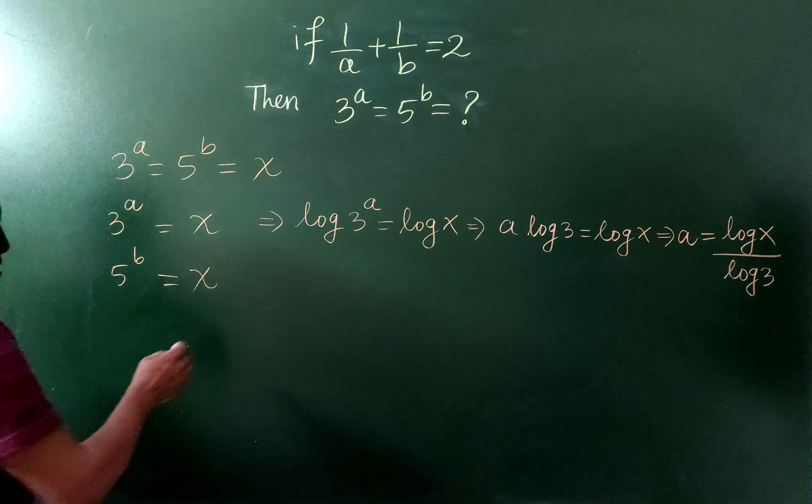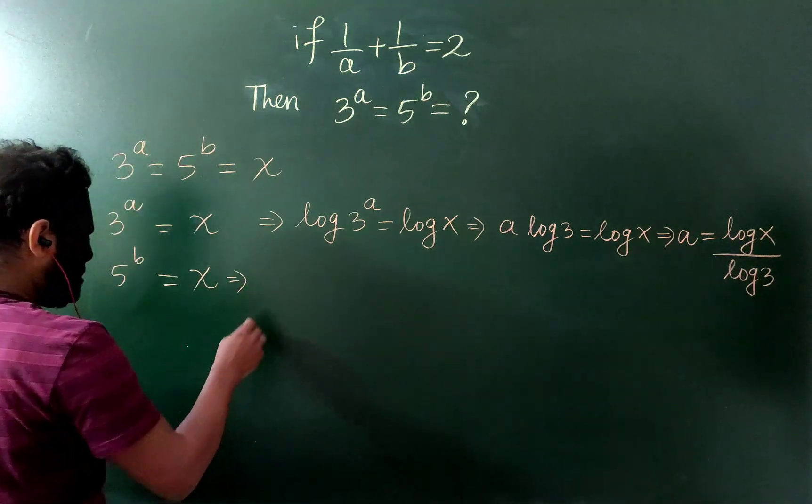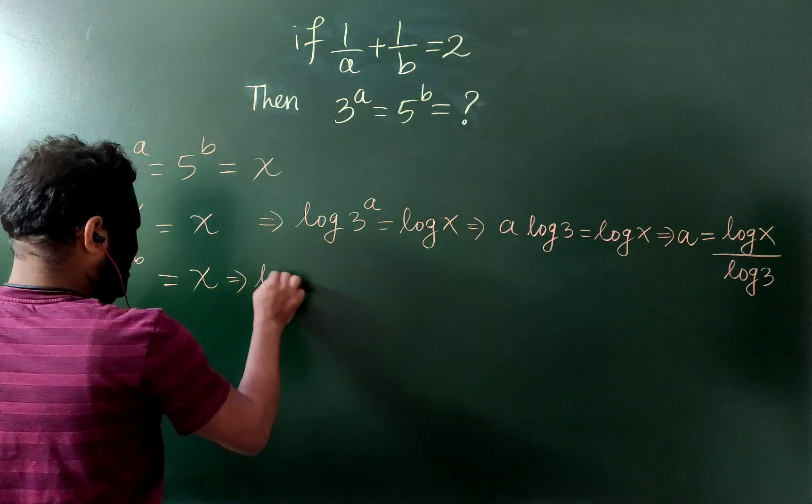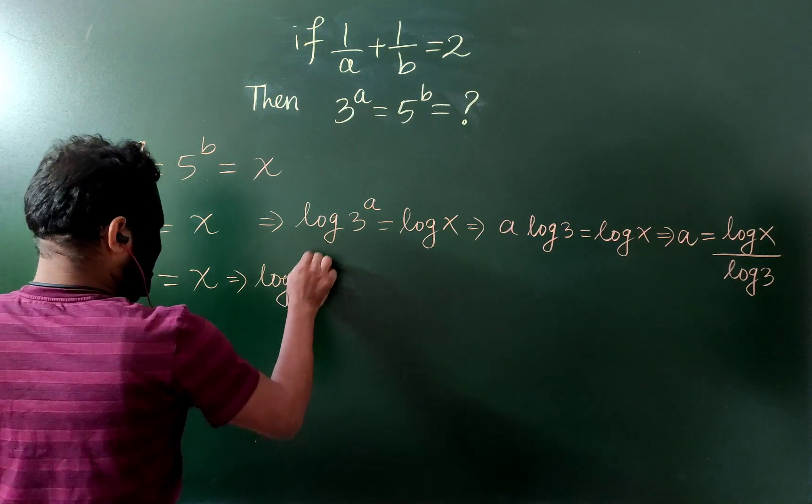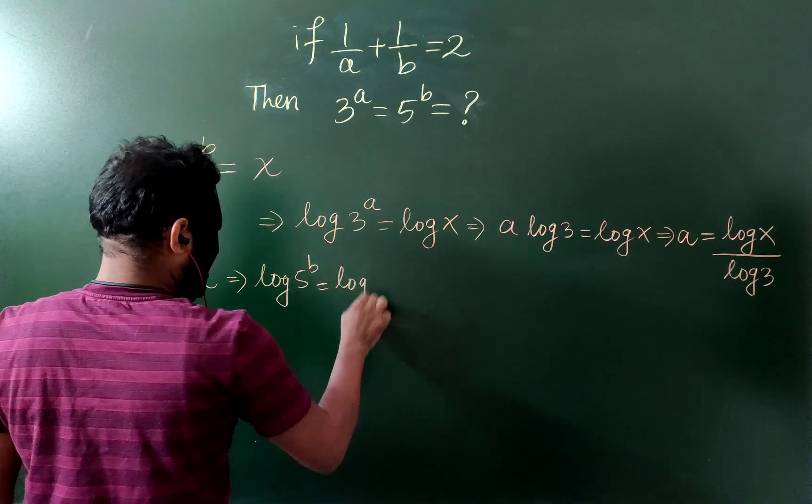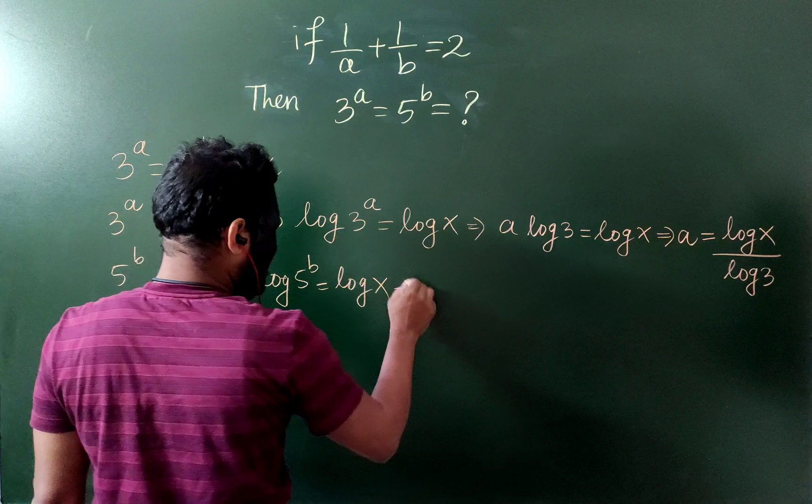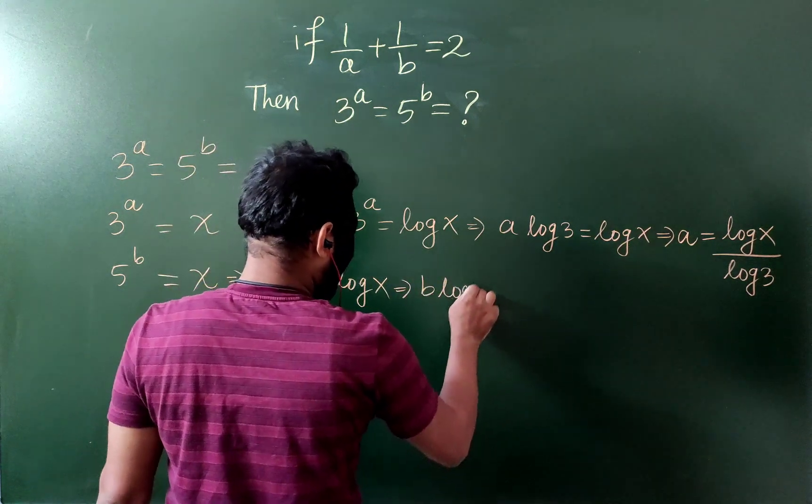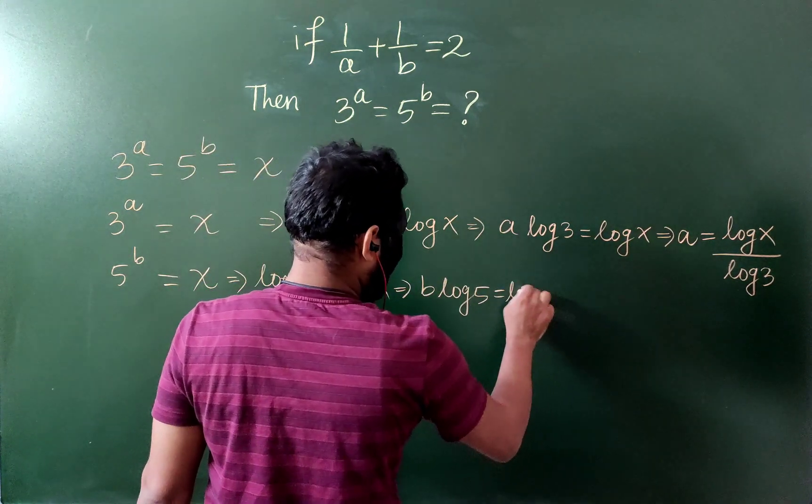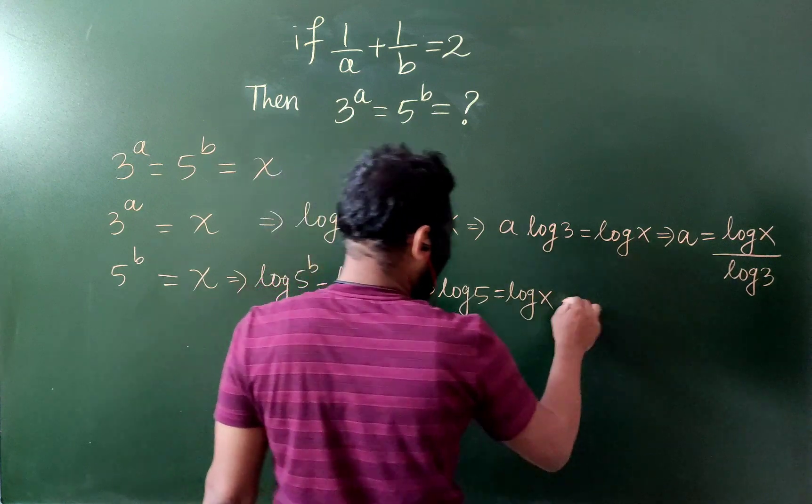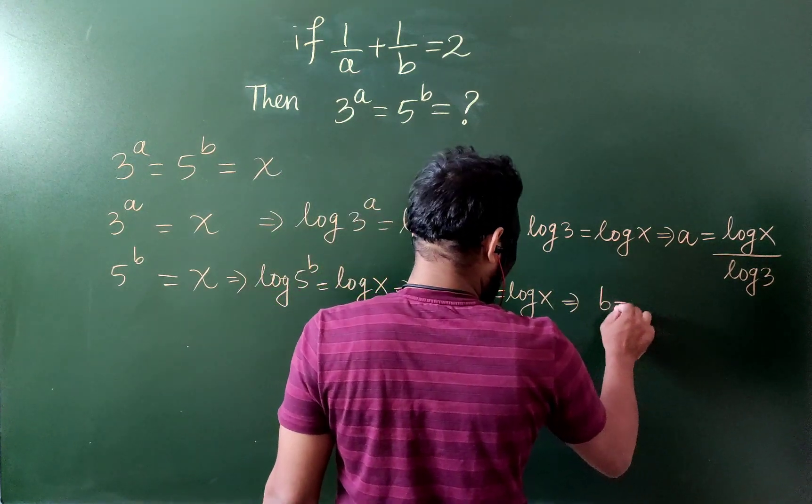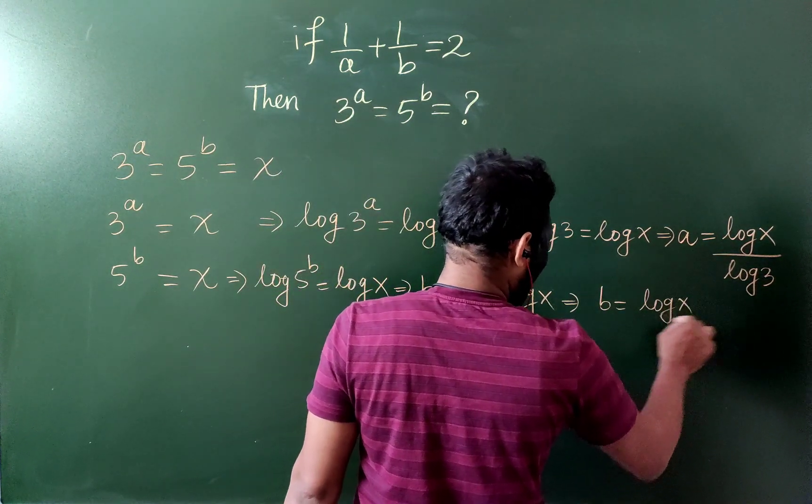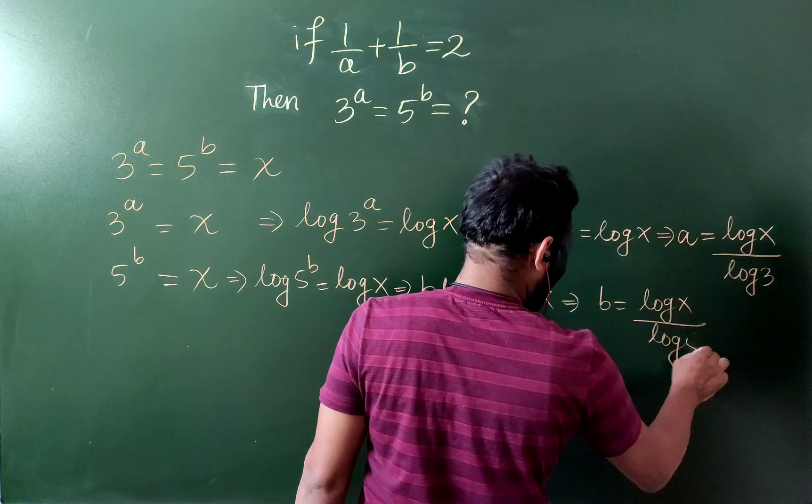And then, similarly this one, take log both sides, then b log 5 equals to log x, and then b equals to log x by log 5.